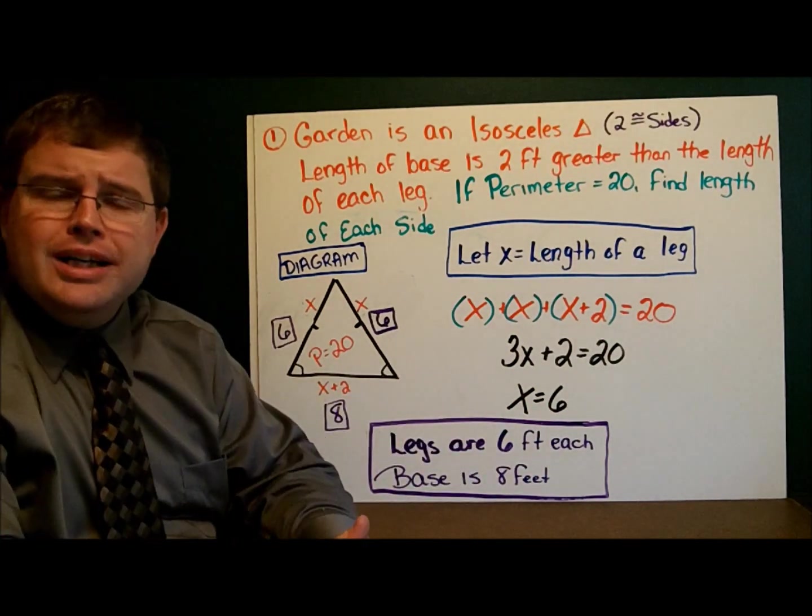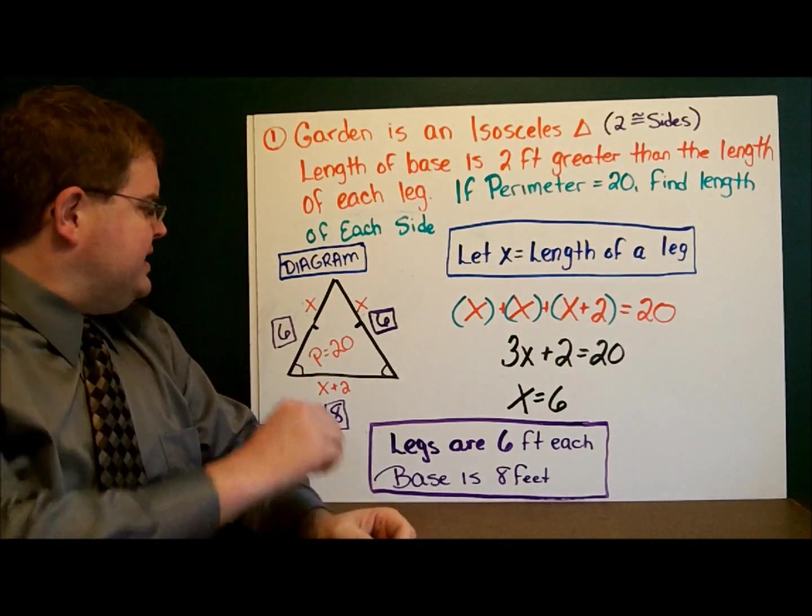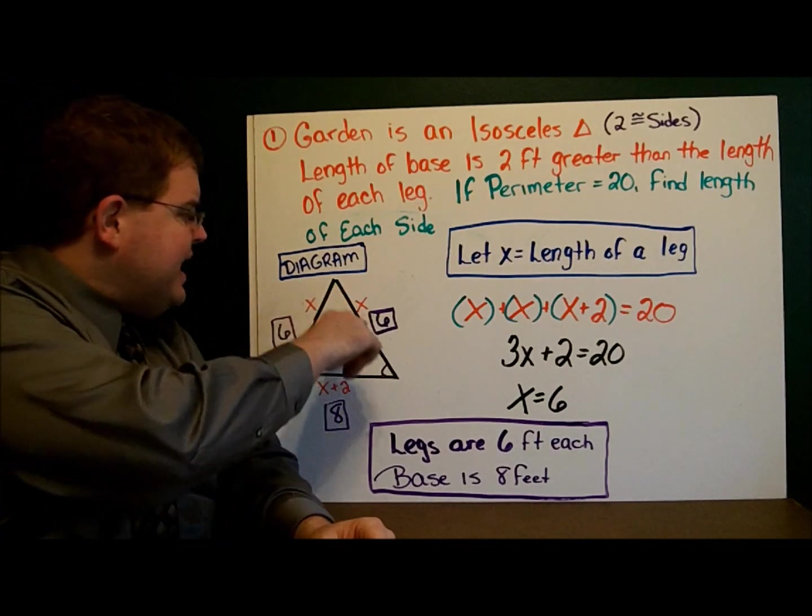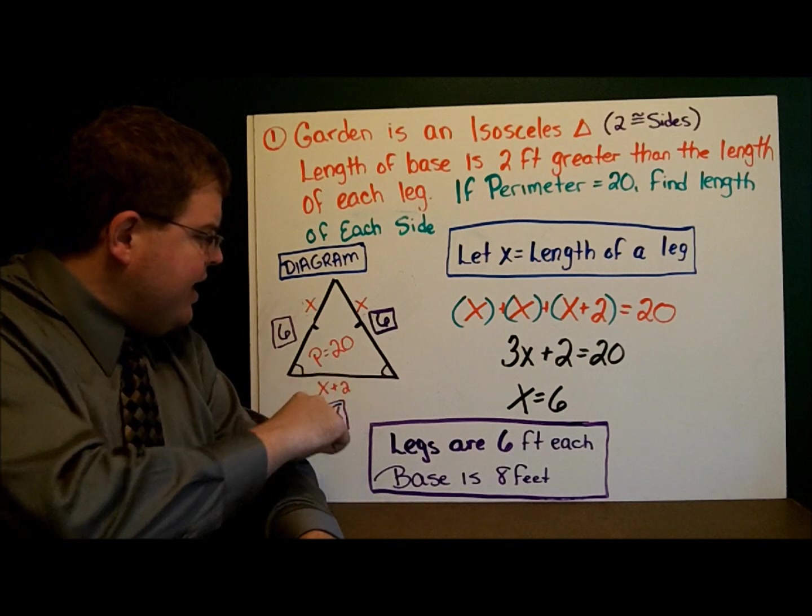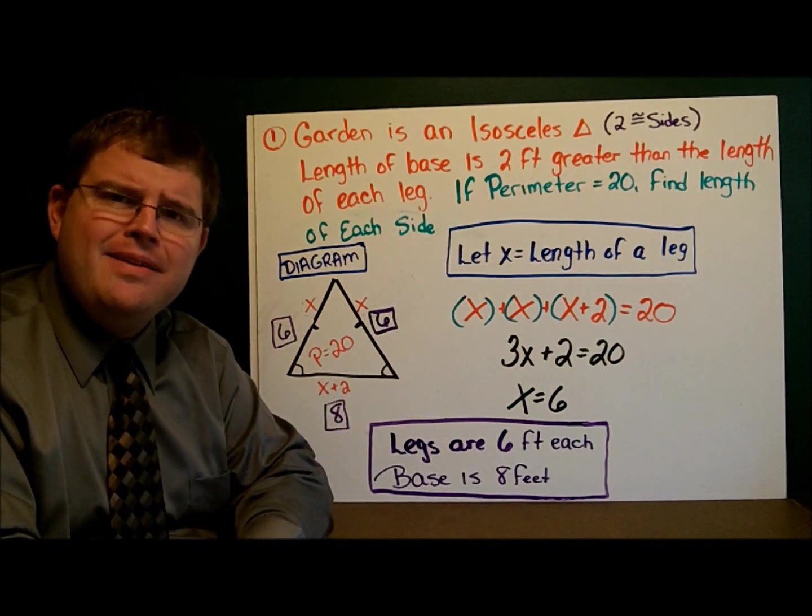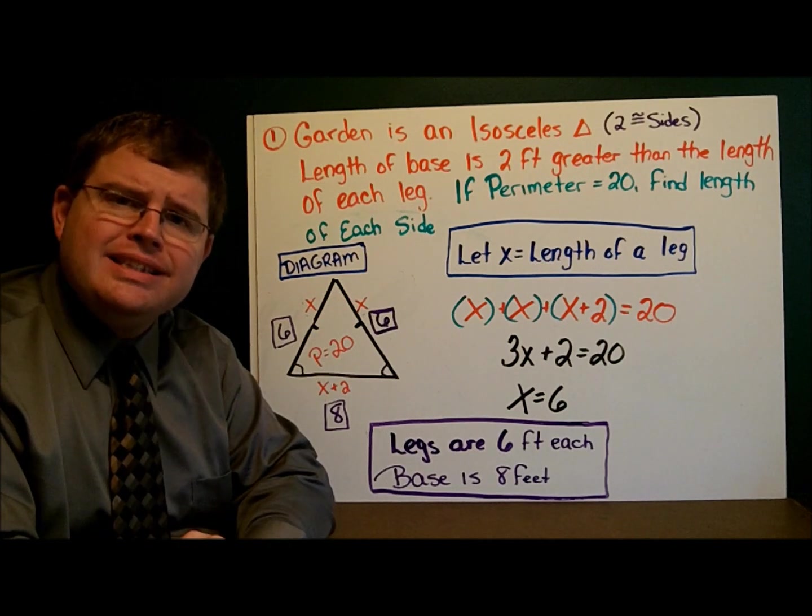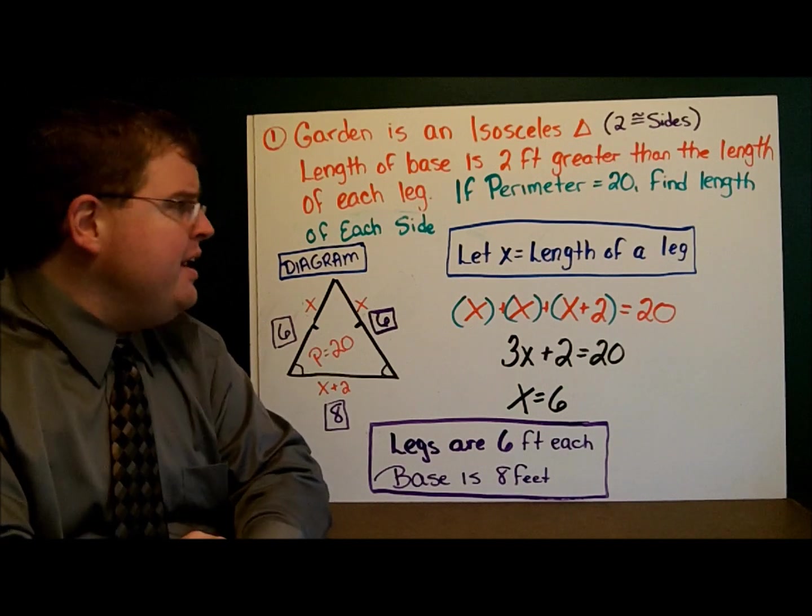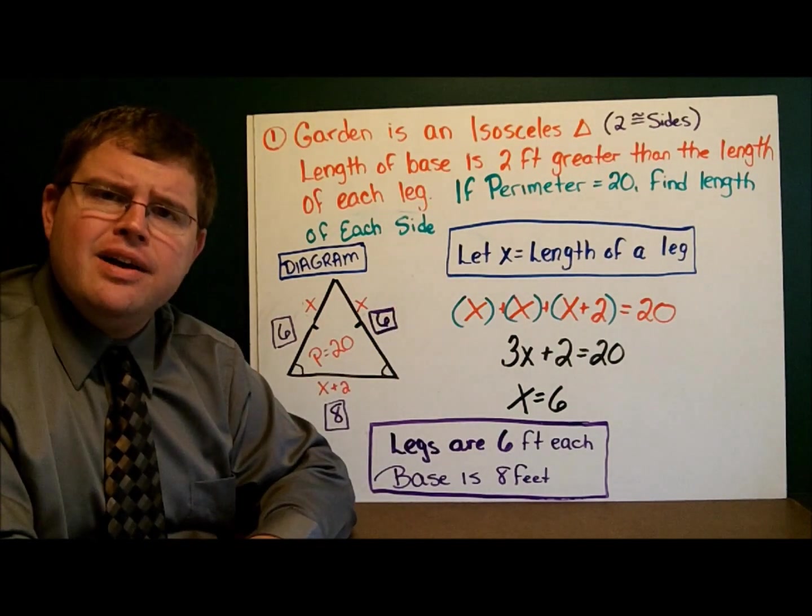Now let's answer the question, what are the dimensions of the triangle? Well, this side here is 6, it's simply x. This side here is 6, it's simply x. And the side down here, x plus 2, that side must be 8 feet. Now, looking back I probably should have my let statement written out. And the side I knew nothing about was called the leg, and so I said let x represent the length of the leg.